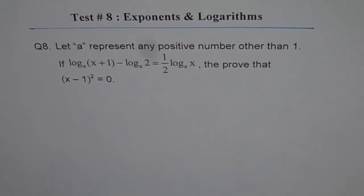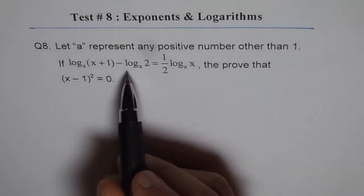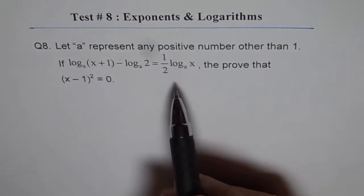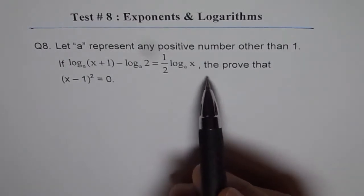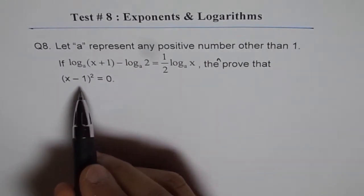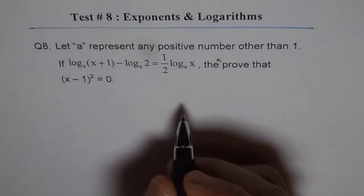Test on exponents and logarithms, Question 8. Let A represent any positive number other than 1. If log to the base A of x plus 1 minus log A of 2 equals half of log A of x, then prove that x minus 1 squared equals 0. Okay, let's solve this and see.